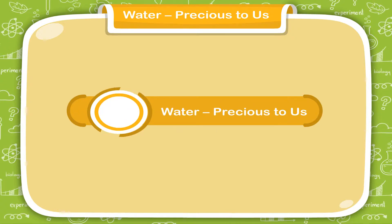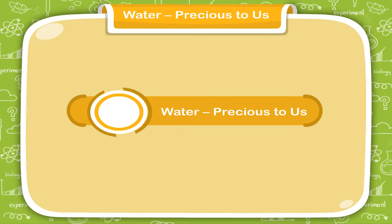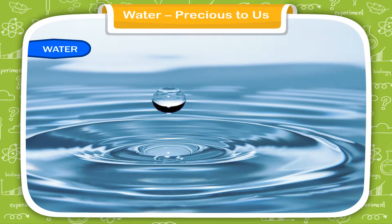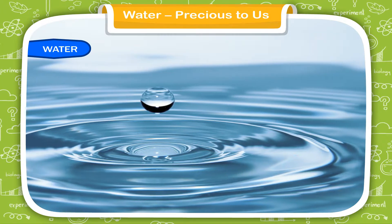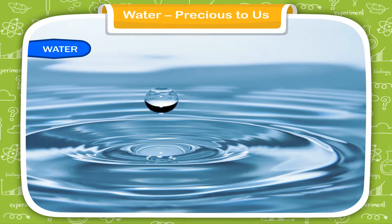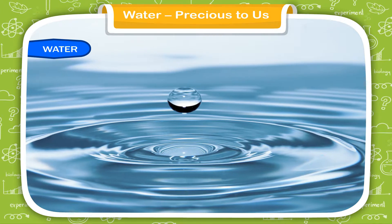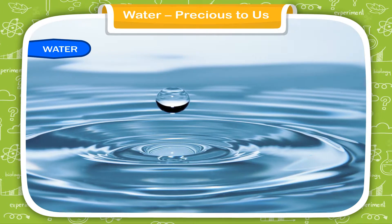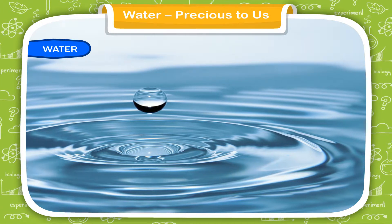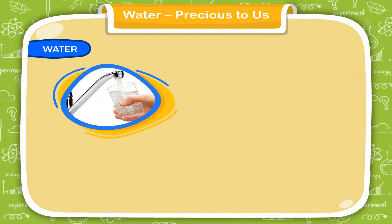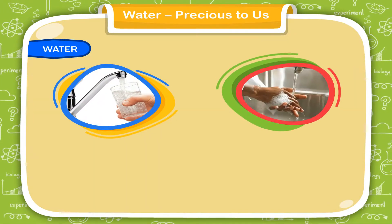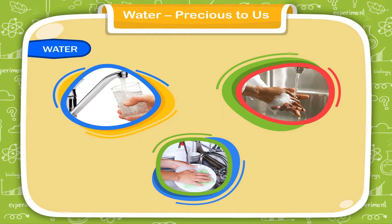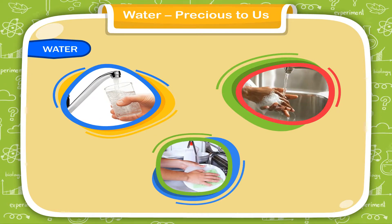Water is precious to us. Like air, water is also needed by all living things; life is not possible without it. We use water in many ways such as for drinking, cleaning, and washing. The important sources of water are lakes, seas, wells, ponds, and rivers. Rain is the main source of water.